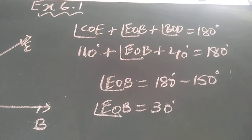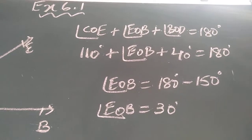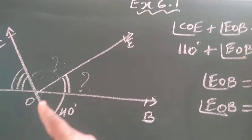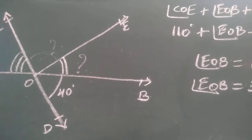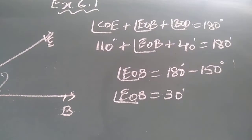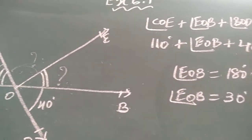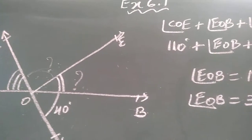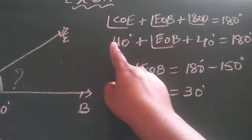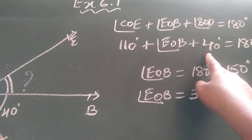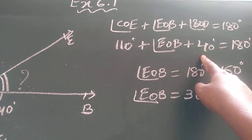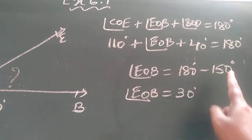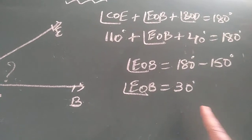I have written the same here — I listed all three angles COE, EOB, and BOD. Their total sum is 180 degrees. Earlier I got angle COE as 110 degrees, so I replaced it. The question gives BOD as 40 degrees. On addition that becomes 150 degrees; taking it to the other side by subtraction gives 30 degrees.